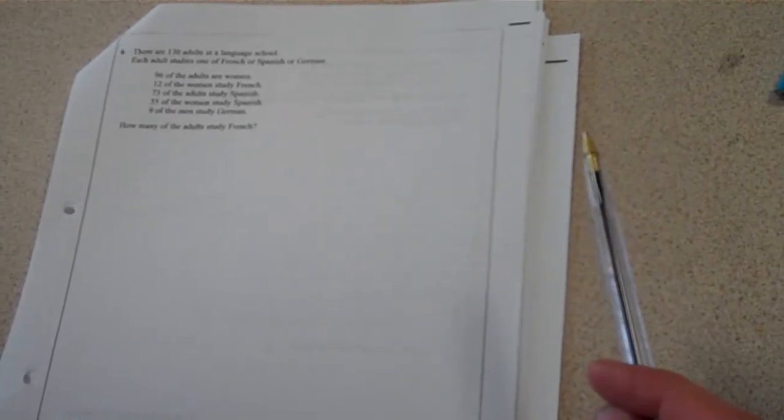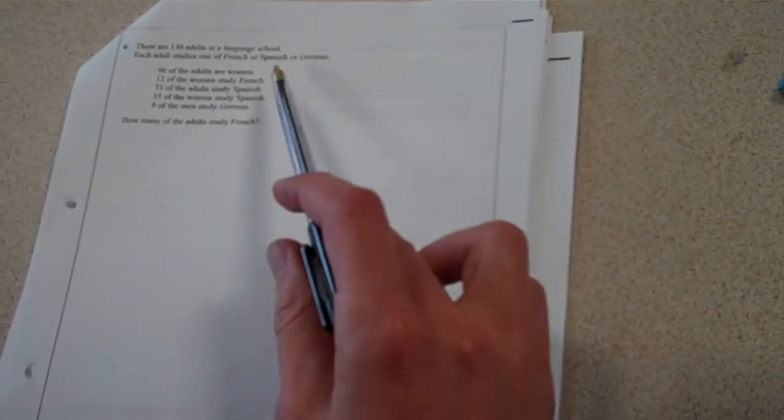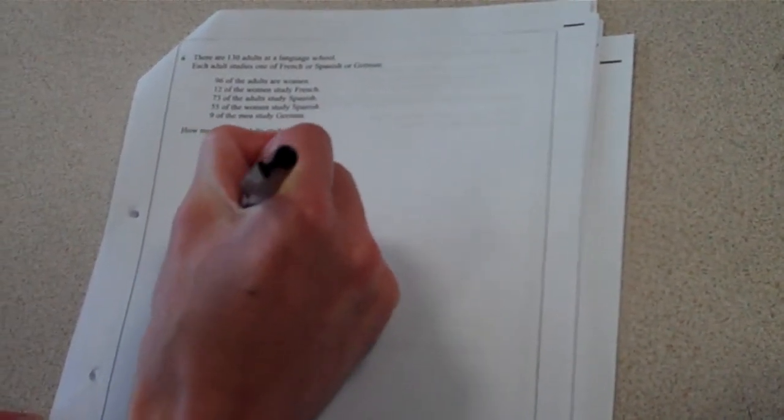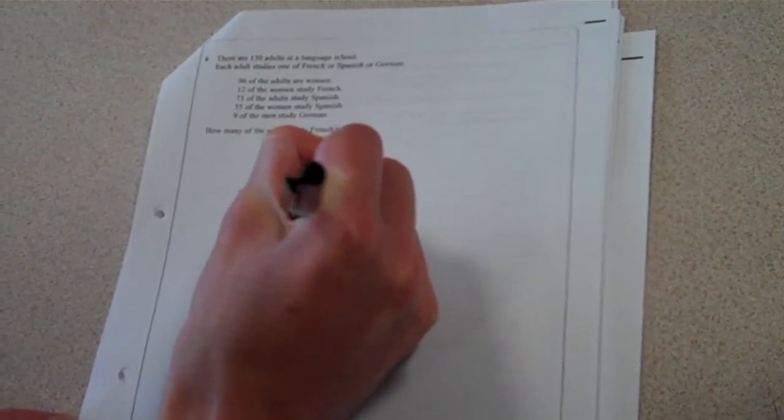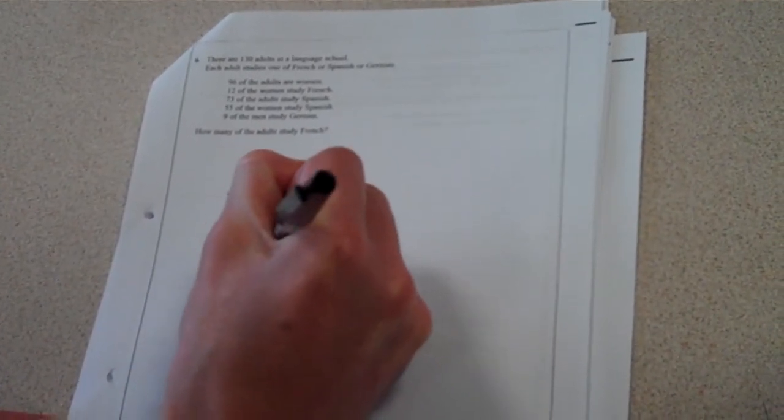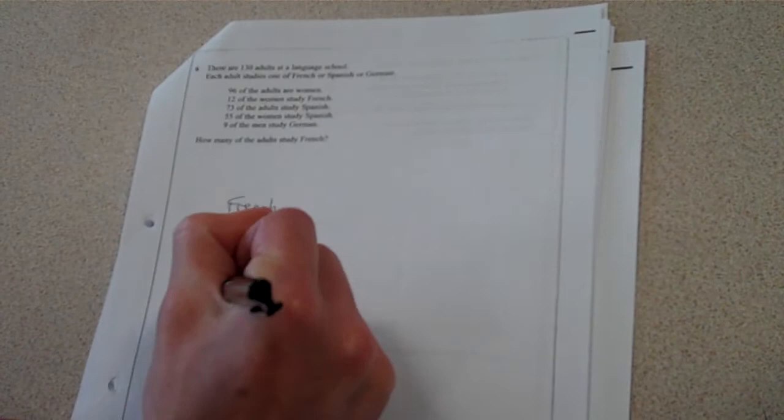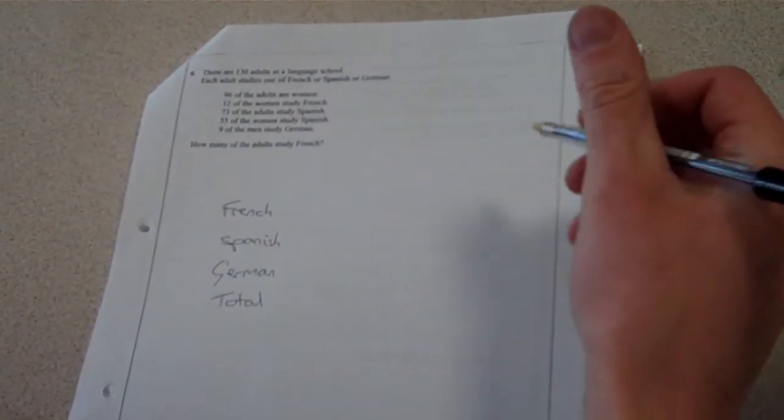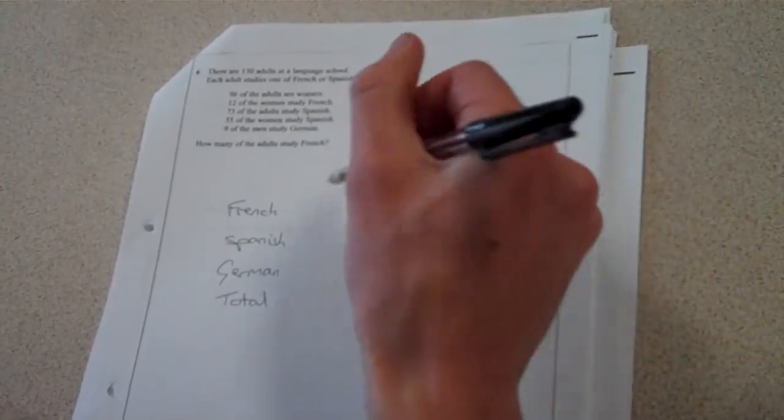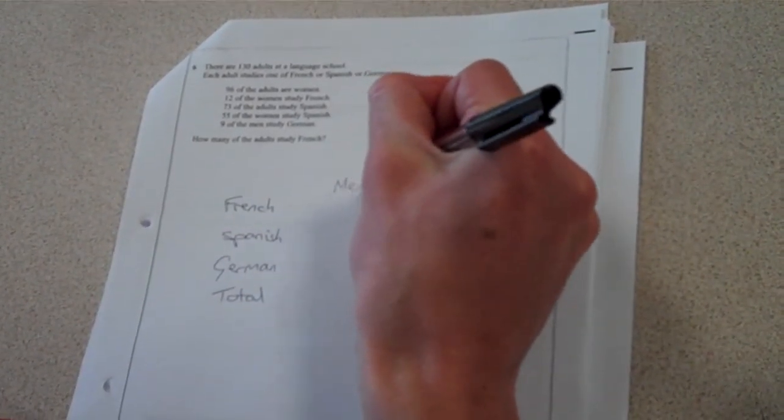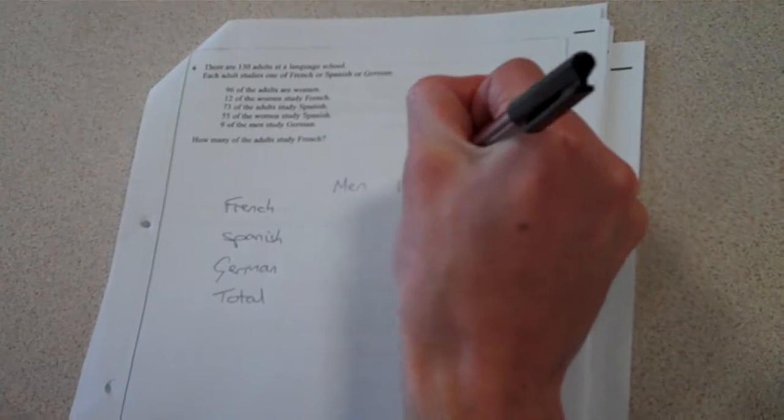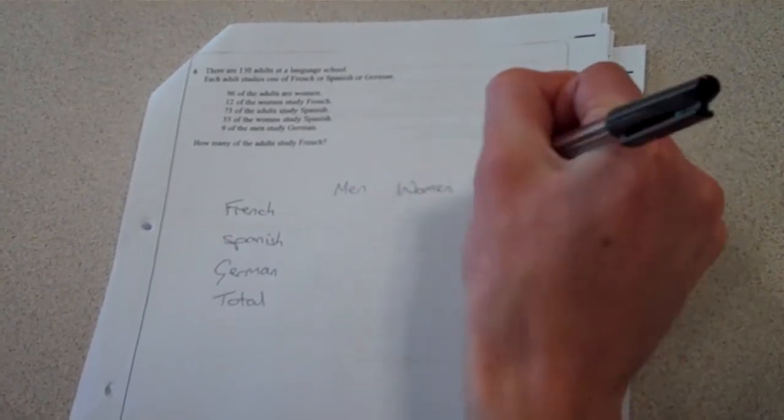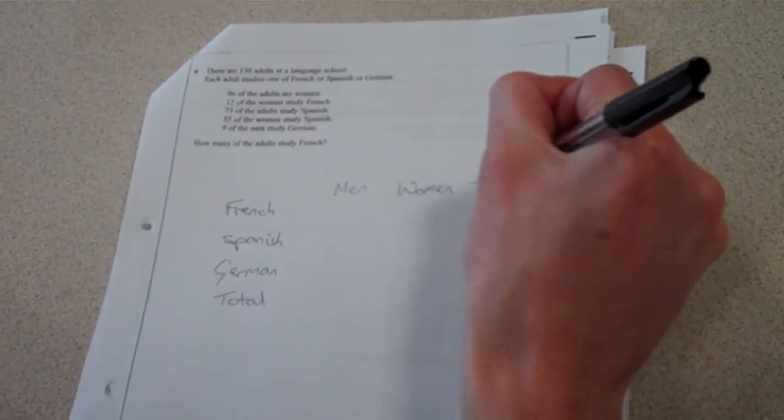It doesn't matter which way round the two go. I think I'm going to do my languages just down the side. So I've got French, Spanish and German as my three options for my languages. And I will need a total row as well. And for my other columns, the other way around that we're talking about is the men and women. So it might be men and women. And it would be fine if you use male or female. And again, we'll need a total.